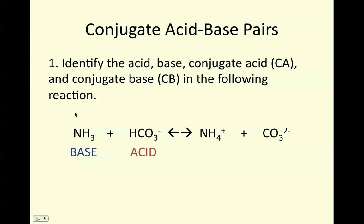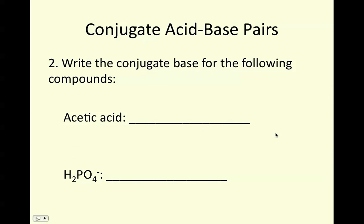You should come up with NH3 acting as our base — it's going to be accepting a proton from HCO3-. NH3 is paired with NH4+, and HCO3- is paired with CO3²-, our carbonate ion. So a base with its conjugate acid, and then acid with its conjugate base. In the reverse reaction, NH4+ will donate the H back to CO3²-, thus acting as an acid in the reverse reaction.